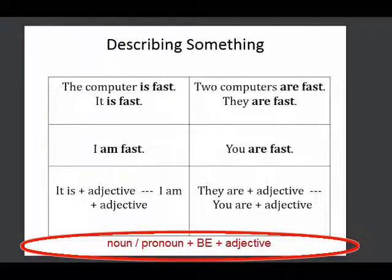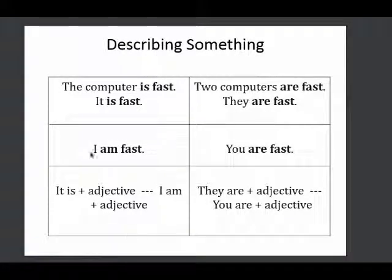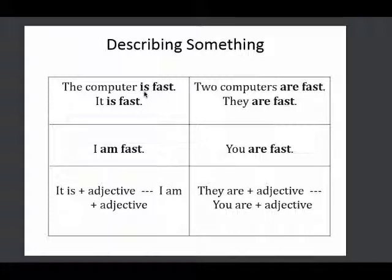Let's look at the examples. The computer is fast. Here, the noun is computer, and we use the be verb is and an adjective, fast. Notice the be verb is singular, is. It is fast. Again, we can use a pronoun, plus the be verb, plus an adjective.